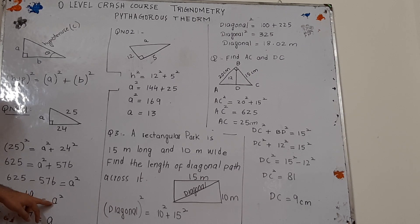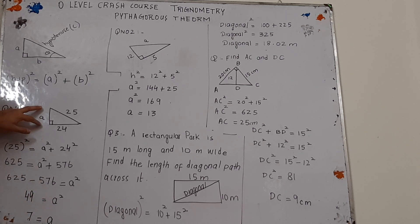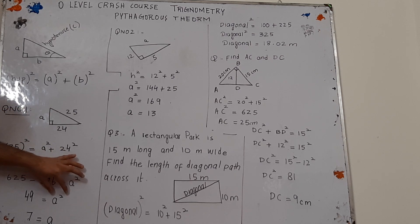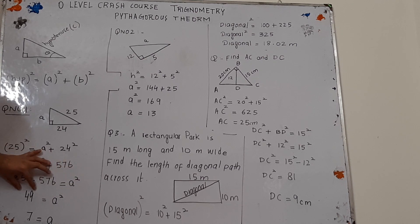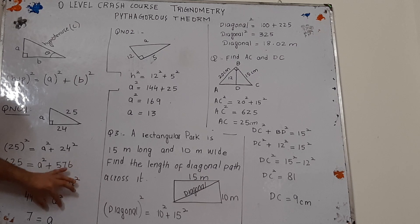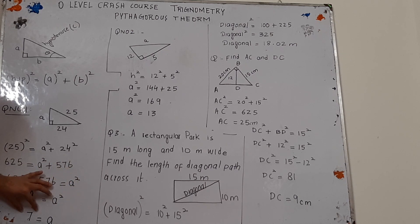That equals a squared. We need to find the value of a, so we take the square root to eliminate the square. Taking square root on both sides: the square root of a squared gives a, while the square root of 49 gives 7.